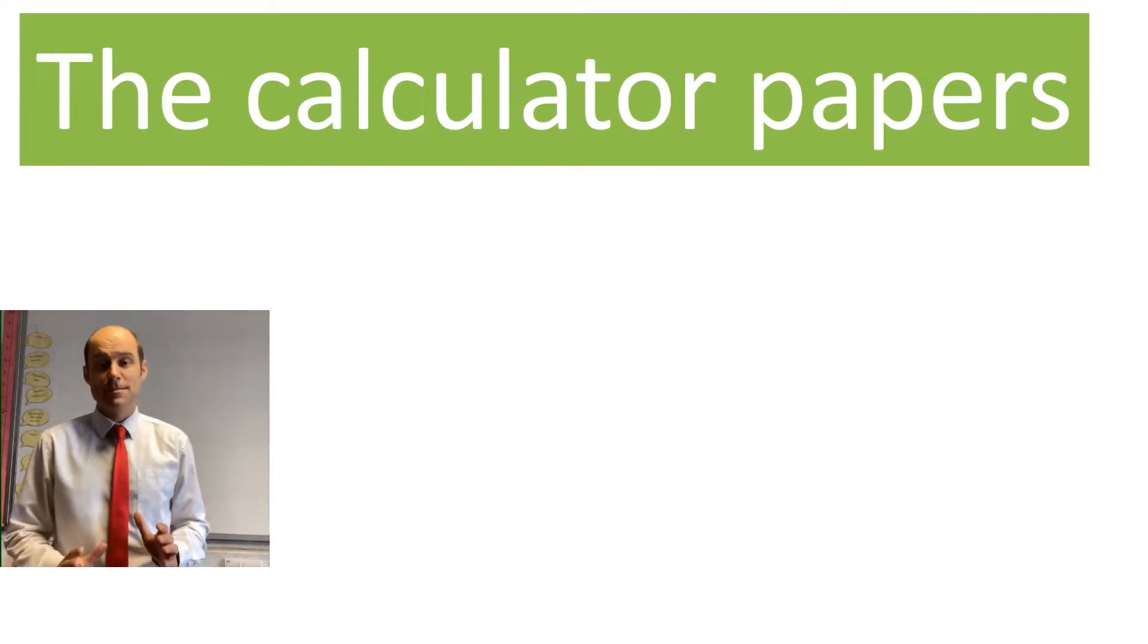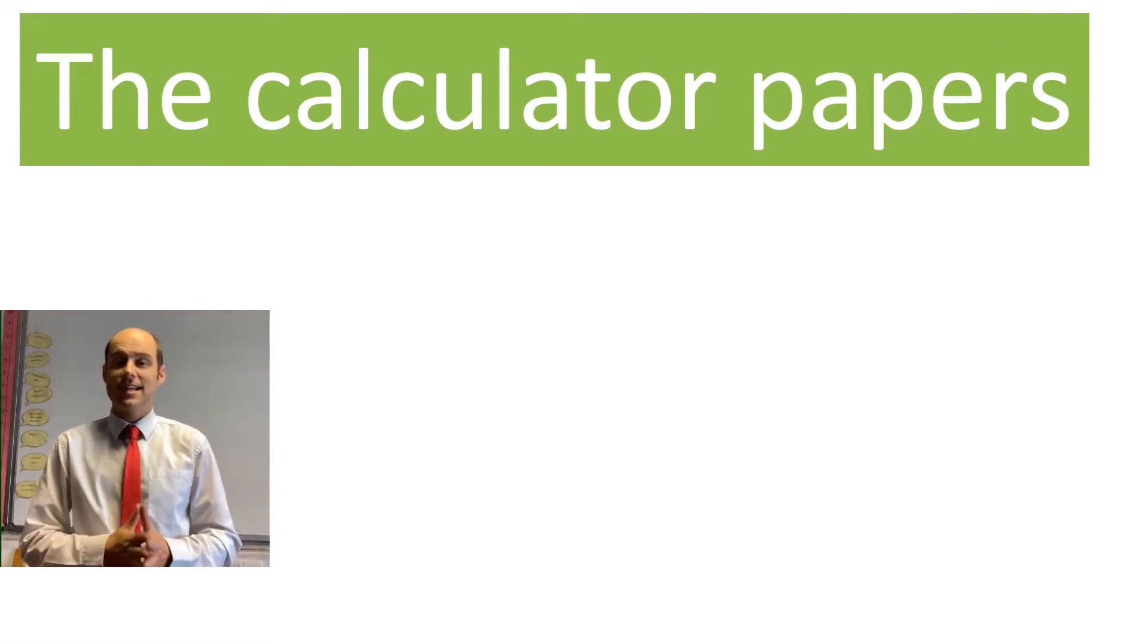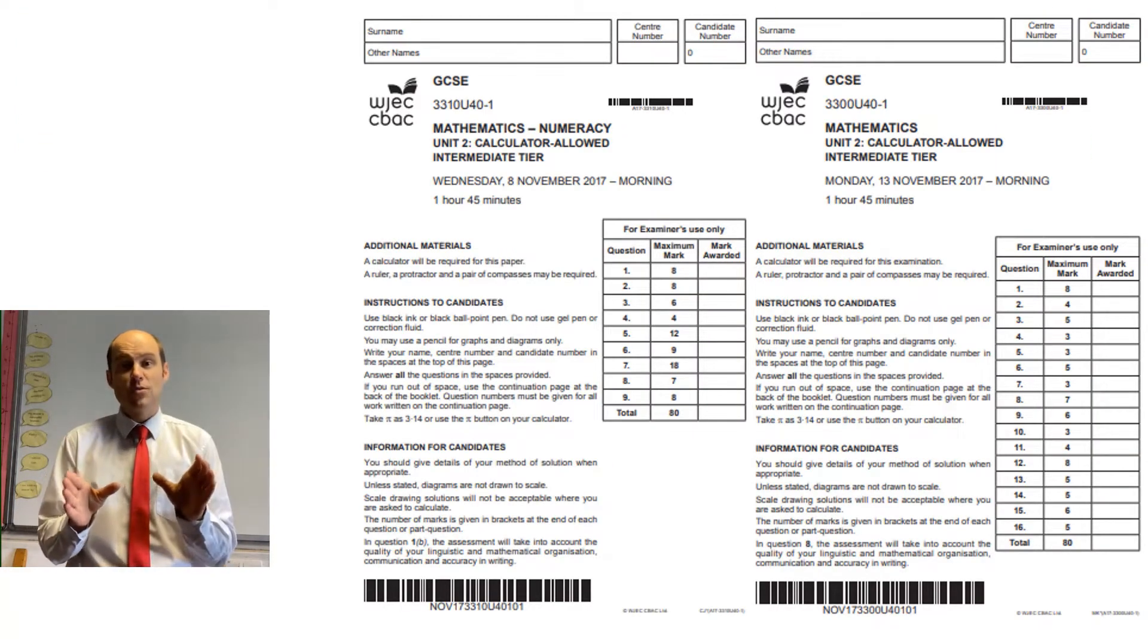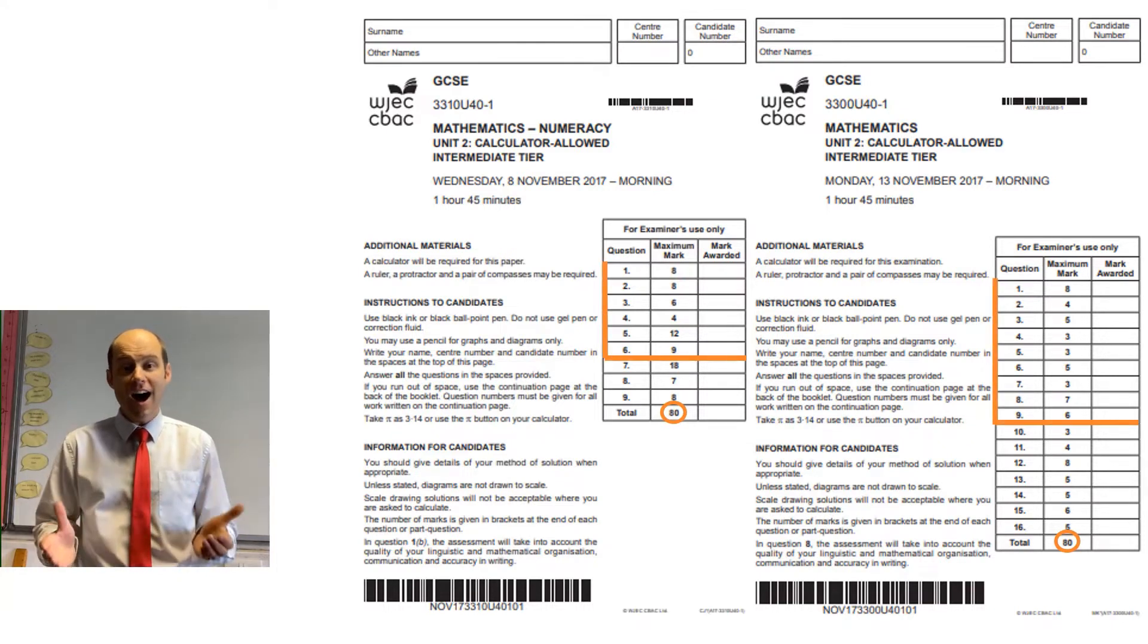This is for the calculator papers for GCSE mathematics and numeracy. Once again, before you start the exam, look at the front covers and work out how far you need to get to get grade C, which is about half of the marks in the paper.